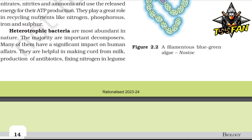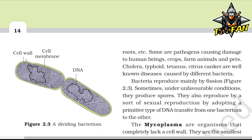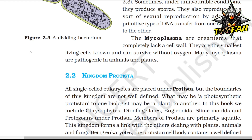Heterotrophic bacteria are most evident in nature and the majority are important decomposers. Many have a significant impact on human affairs — they are helpful in making curd from milk, production of antibiotics, and fixing nitrogen in legume roots. Some are pathogens causing damage to human beings, crops, farm animals, and pets. Cholera, typhoid, tetanus, and citrus canker are well-known diseases caused by different bacteria. Bacteria reproduce mainly by fission; sometimes under favorable conditions they produce spores, and they also reproduce by a primitive type of DNA transfer. Mycoplasmas completely lack a cell wall, are the smallest living cells known, and can survive without oxygen; many are pathogenic in plants and animals.